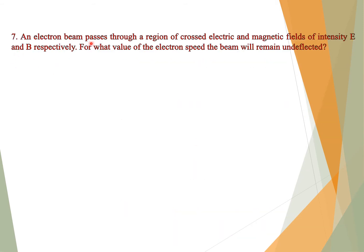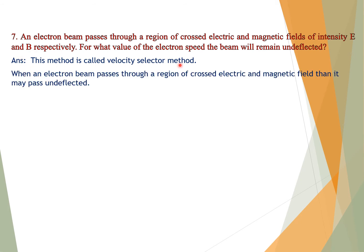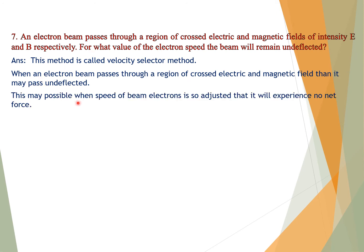Question number seven: An electron beam passes through a region of crossed electric and magnetic fields of intensity E and B respectively. For what value of electron speed will the beam remain undeflected? Answer: This method is called the velocity selector method. When an electron beam passes through a region of crossed electric and magnetic fields, it may pass undeflected when the speed of the beam electrons is adjusted so that it experiences no net force.